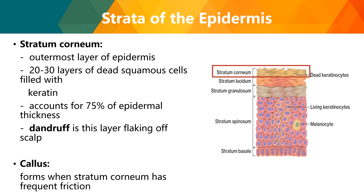The first layer is the stratum corneum, the outermost layer of the epidermis. It has 20 to 30 layers of dead squamous cells filled with keratin and accounts for 75% of epidermal thickness. Excessive sloughing of stratum corneum cells from the scalp is called dandruff. In skin subjected to friction, the number of layers greatly increases, producing a thickened area called a callus. Over a bony prominence, the stratum corneum can thicken to form a cone-shaped structure called a corn.